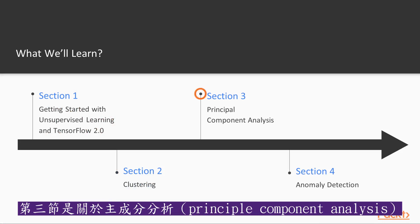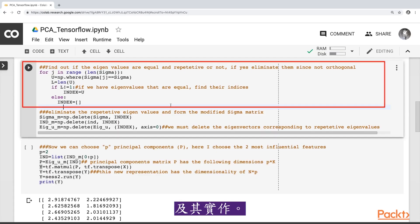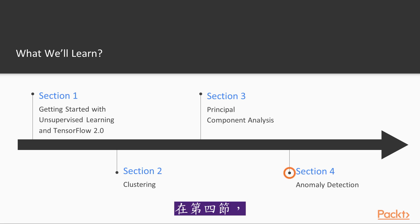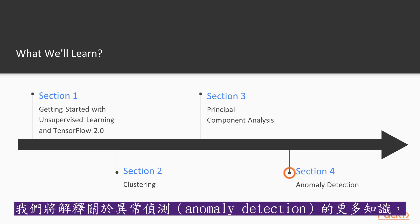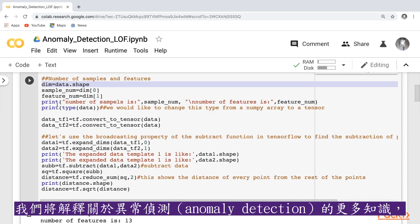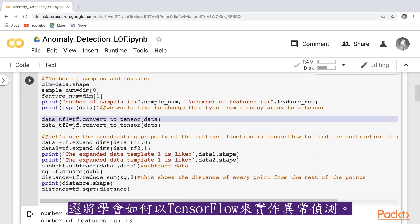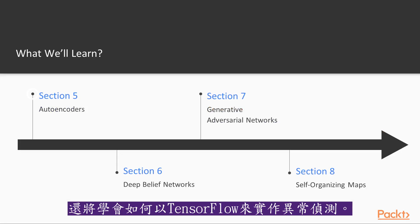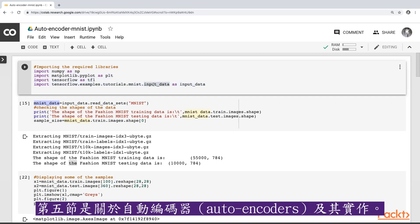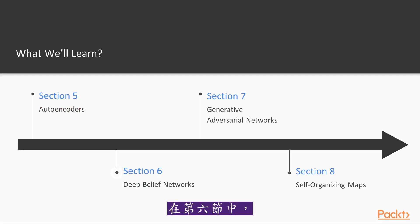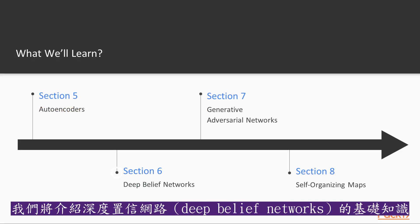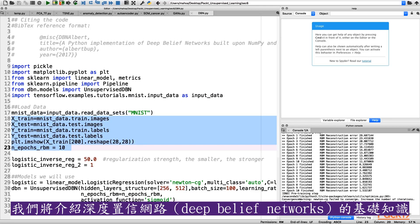Section three is about principal component analysis and its implementation. In section four, we are going to explain more about anomaly detection, and we will also learn about its implementation using TensorFlow. Section five is about autoencoders and how to implement it. In section six, we will cover the basics of deep belief networks and their implementation.